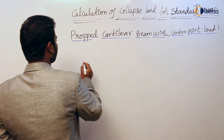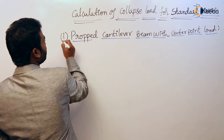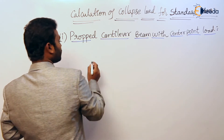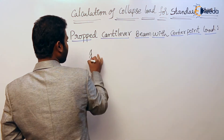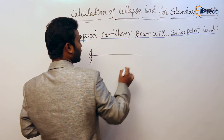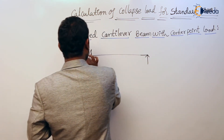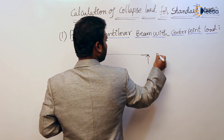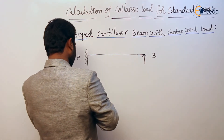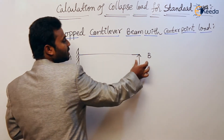So the proper cantilever beam — considering the first case, a proper cantilever beam with center point load. Let us take a proper cantilever beam of span L, with points A and B. This is the proper cantilever beam with fixed support at A and hinged support at B.